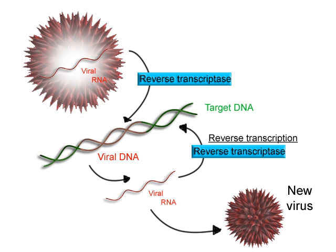In bacteria, RNA polymerase holoenzyme consists of five subunits: two alpha subunits, one beta subunit, one beta-prime subunit, and one omega subunit. There is one general RNA transcription factor, σ. The RNA polymerase core enzyme binds to σ to form the holoenzyme and then binds to a promoter. In archaea and eukaryotes, RNA polymerase contains subunits homologous to each of the five bacterial subunits and also contains additional subunits. The functions of the bacterial general transcription factor σ are performed by multiple general transcription factors that work together.